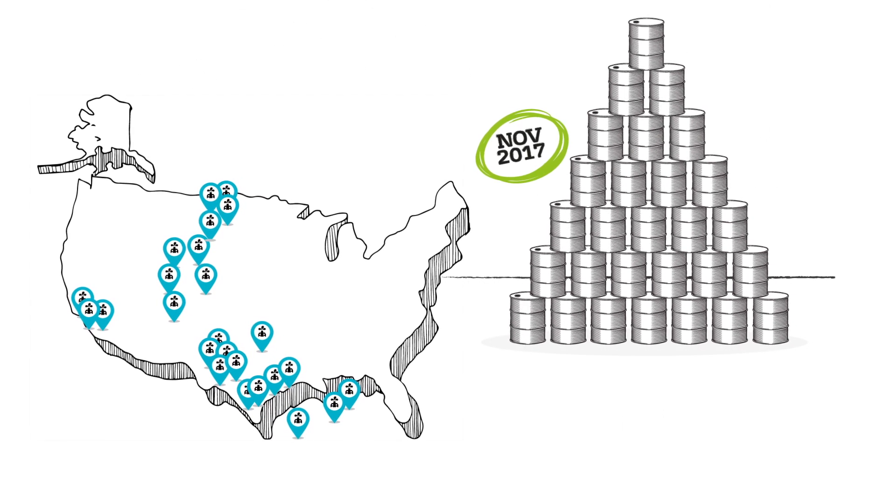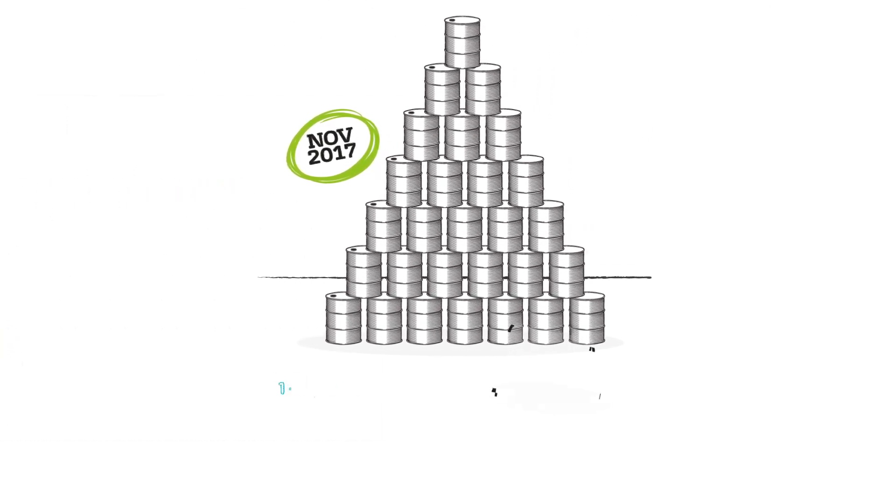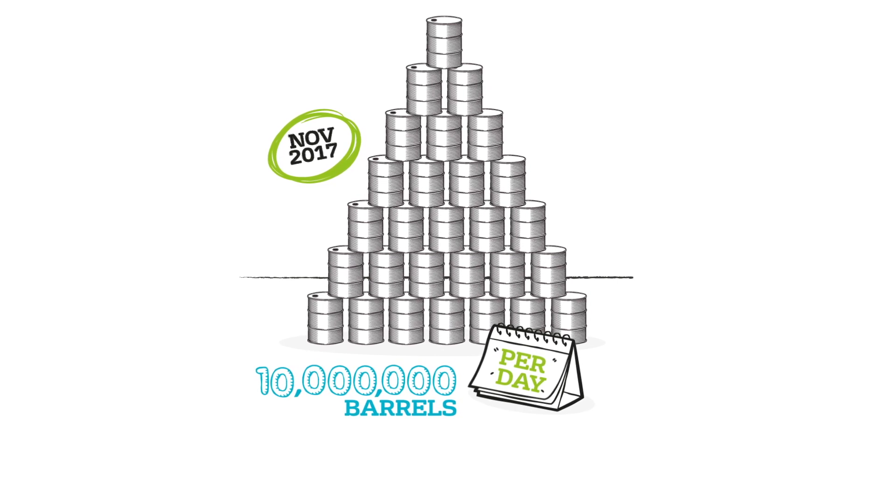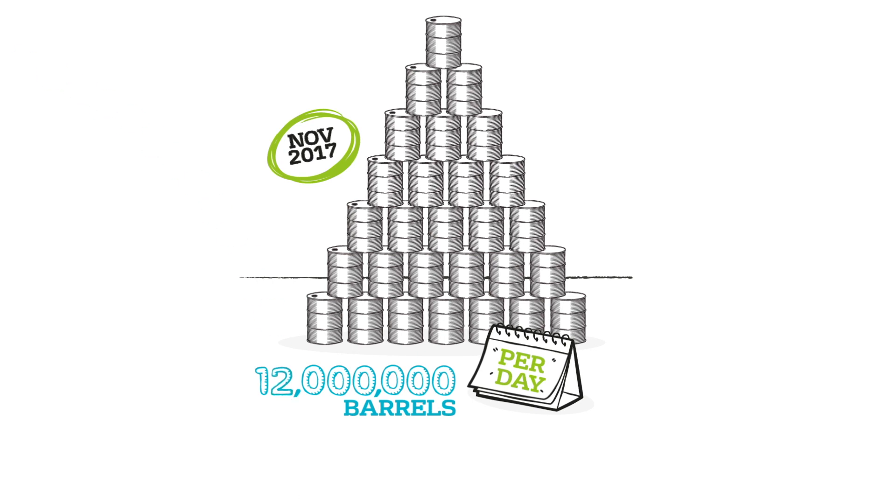In November 2017, oil production broke 10 million barrels a day for the first time since 1970, and that figure could soon rise to 12 million barrels a day.